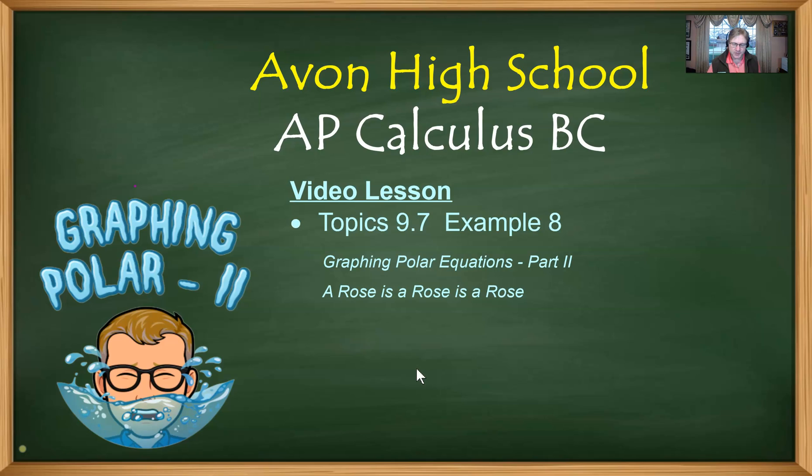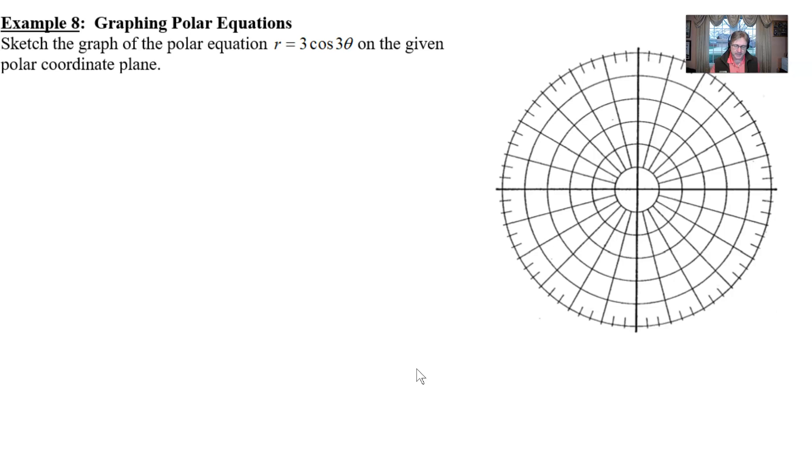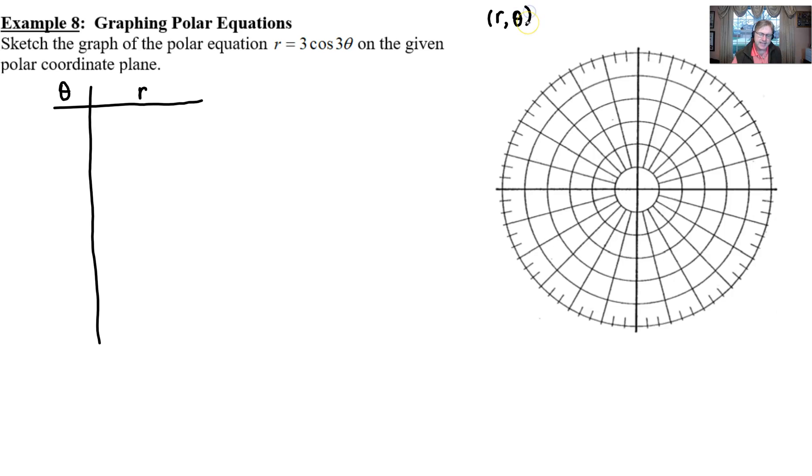We're going to take a look at our first rose in example eight. It says sketch the graph of the polar equation r = 3cos(3θ) on the given polar coordinate plane. What I typically tell students to do is put together a table of values like a t-chart, but you want to be careful because t-charts can be very time-consuming. I'm going to put a theta value in that column and an r value. The theta is going to act as our independent variable and r will be the output.